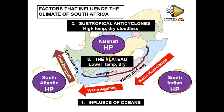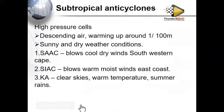Number three, we have the plateau low temperature — lower temperature — which is dry. In this case we have the escarpment, and this escarpment is also influencing the climate. We shall look at it when looking at the big winds.